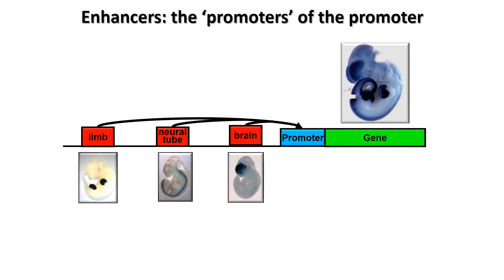My lab is interested in characterizing regulatory elements and how mutations in them can lead to various phenotypes. In particular, we're interested in enhancers that are sort of the promoters of the promoter. In the example you see here, a mouse embryo expressing the gene wherever it's dark blue — in the limb, the neural tube, and the brain. This gene would likely have enhancers that tell it to turn on in the limb, in the neural tube, and in the brain, and combined with the promoter give this complex expression pattern. So the enhancers could be dubbed as the promoters of the promoter.